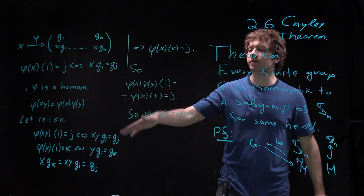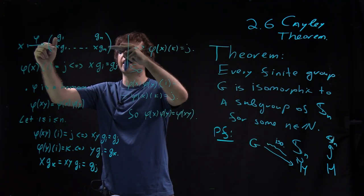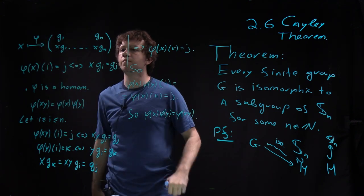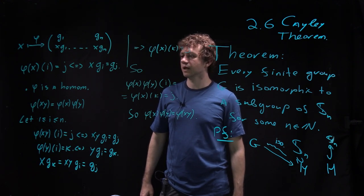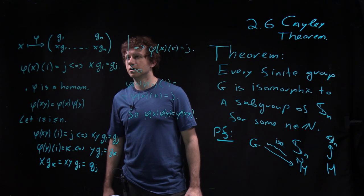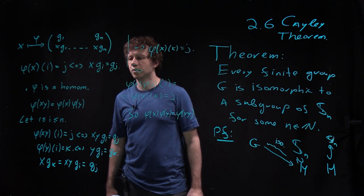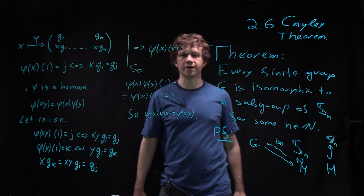And so phi of X phi of Y equals phi of XY. Writing it formally is a little bit trickier than to see it intuitively because multiplying by X permutes them, then you multiply them by Y, you permute them. The composition is multiplication by XY. So you should be slightly careful here with order though. Right, that's fine.